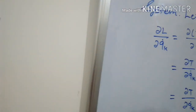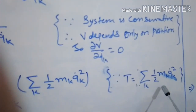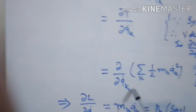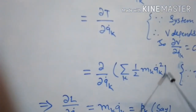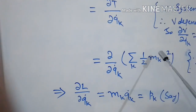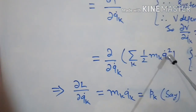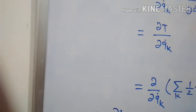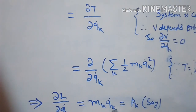Since T is kinetic energy, and kinetic energy T is defined as T equal to summation K of half Mk QK dot squared, we substitute the value of T. Then del by del QK dot of summation K half Mk QK dot squared gives half into 2 Mk QK dot. So we may write del L upon del QK dot is equal to Mk QK dot.